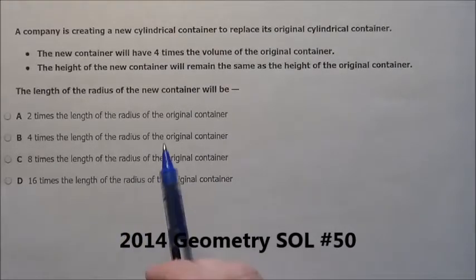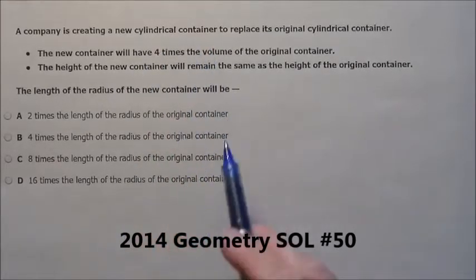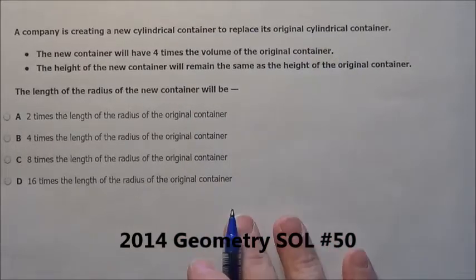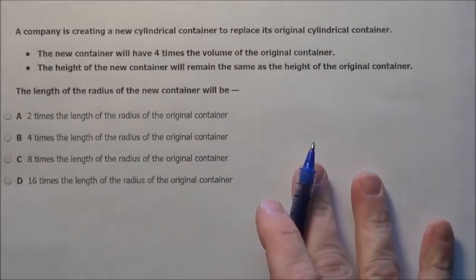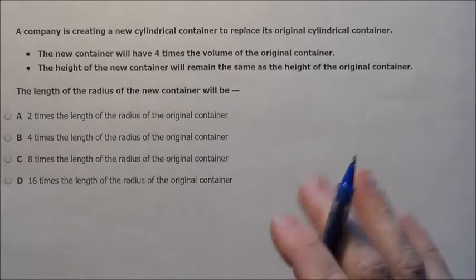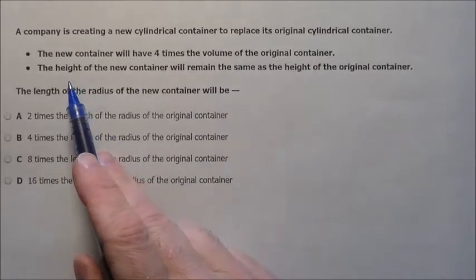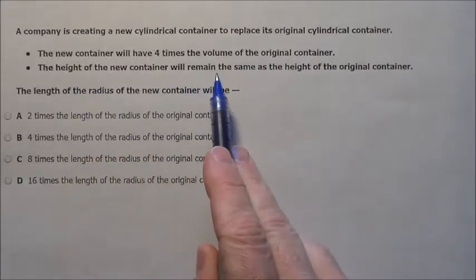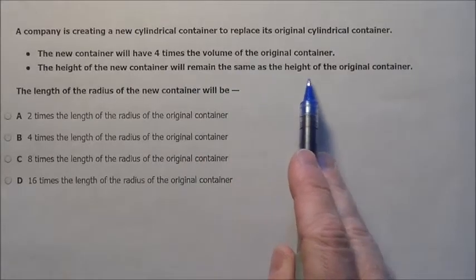Here's question 50. It says the company is creating a new cylindrical container to replace its original container. The new container will have 4 times the volume, so it's going to hold 4 times as much as the original container. The height of the new container will remain the same as the height of the original.